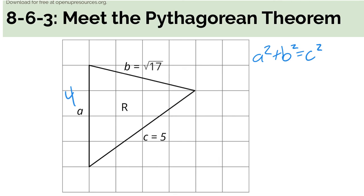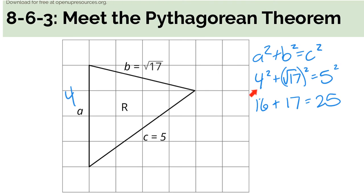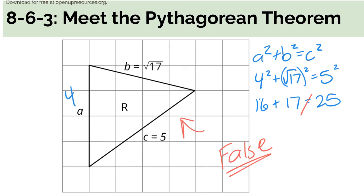You're going to try this one on your own. They give you the lengths for B and C, and side A is easy to see — it's four units long. Fill in what you know for your Pythagorean theorem and see if it makes it true. What I end up with is 16 plus 17 equals 25 — that does not work. So this one is false. The Pythagorean theorem does not work in this case, because this triangle is not a right triangle. The Pythagorean theorem only works for right triangles.